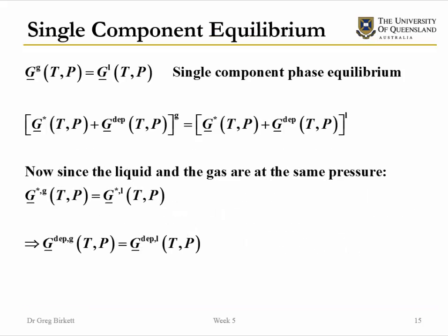From the previous lecture we were looking at the criteria for phase equilibrium. When we have phase equilibrium, we have equal temperature and pressure, but we also have equal Gibbs free energy between our two phases. In this case we are looking at the gas phase and the liquid phase as the phases in equilibrium. We could also be looking at liquid and solid phases, but we are just going to be looking at liquid and gas phases here.